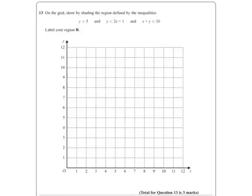We've got to draw on the grid these three graphs and then shade the region defined by the inequality. So, first graph I'm going to draw is y equals 5. y equals 5 is a horizontal line, cutting the y axis at 5, nice and easy.